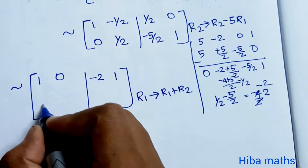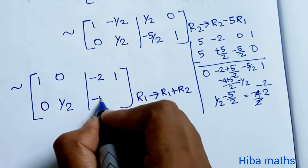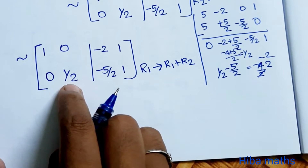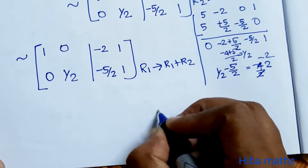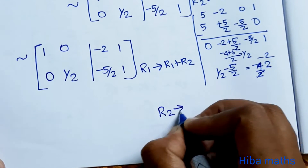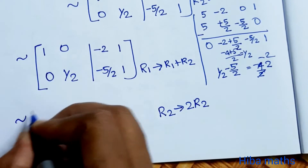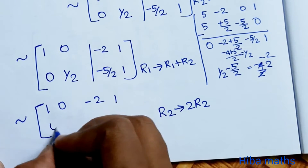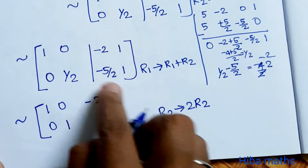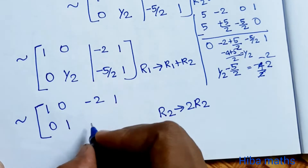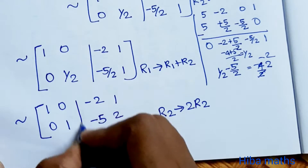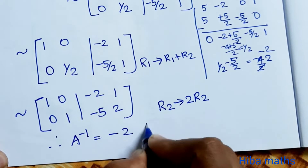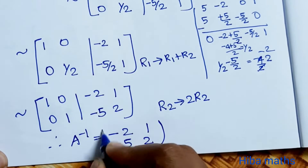The left side is now the identity matrix. Therefore, A inverse is equal to [-2, 1; -5, 2]. This is our required inverse matrix.